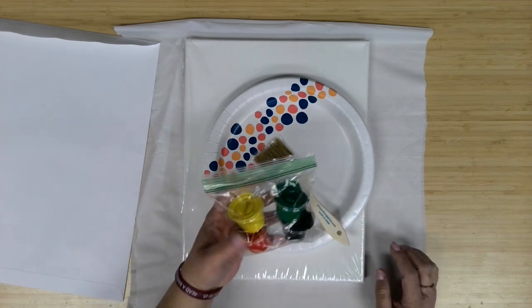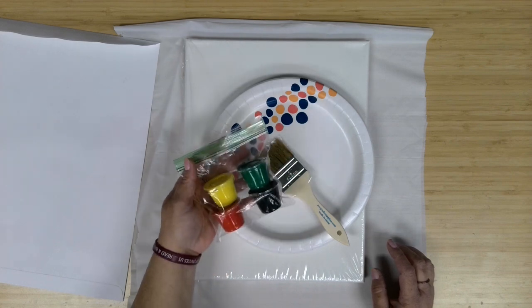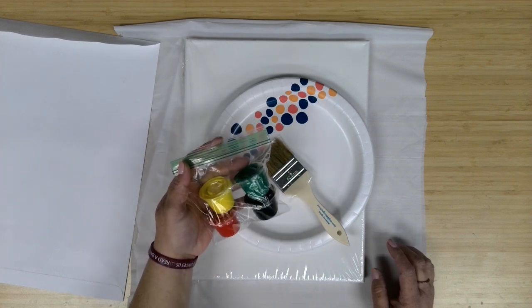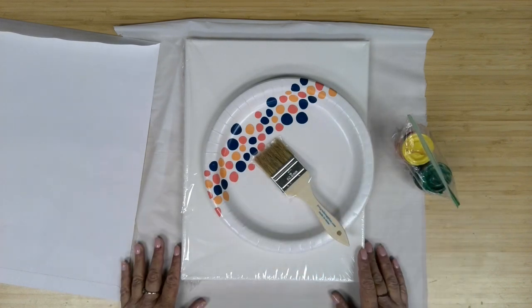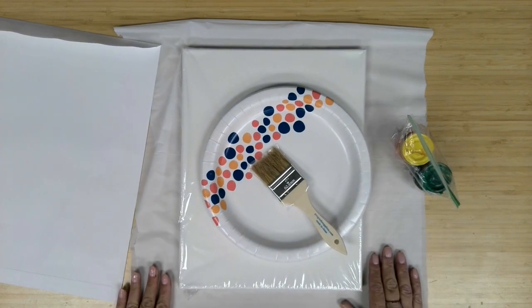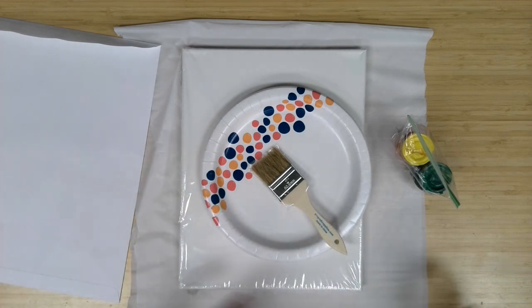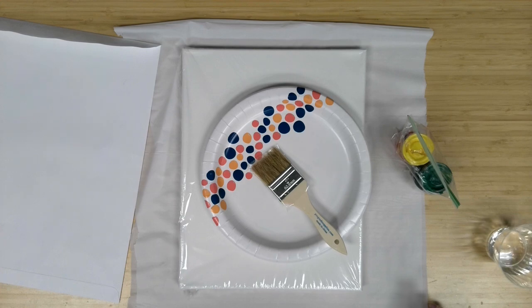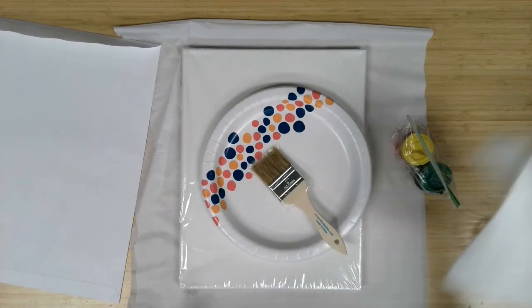And then stapled to the envelope was a small snack bag with 4 colors of paint: black, red, green, and yellow. And other than the supplies being provided, something you might consider is some water to rinse off your brush in between colors, and a paper towel to clean off your brush in between colors.